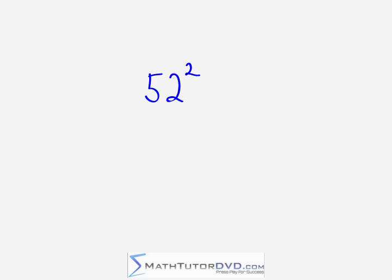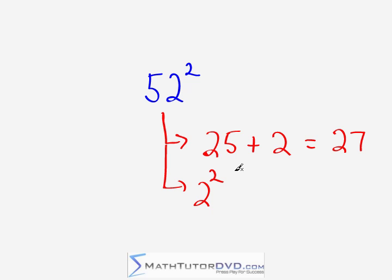Okay, our final little example to show how to square numbers in the 50s, we'll just take the number 52. Same process as before, add to it the second digit there, which is 2. That's easy enough. 25 plus 2 is 27. So we in our head think 27. And then the next thing we do is we take the second digit and we square it. So 2 squared is 4, because 2 times 2 is 4.